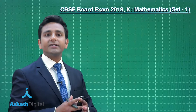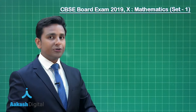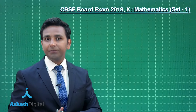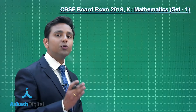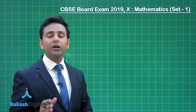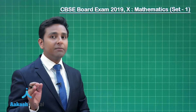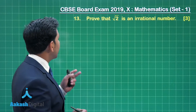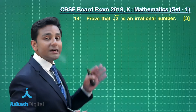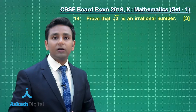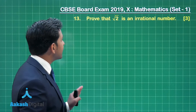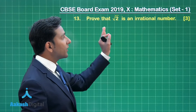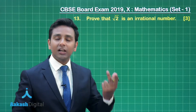Let us discuss the solution of Section C. Question numbers 13 to 22 carry 3 marks each. Now let us discuss question number 13. This question is from the chapter Real Numbers and the question says: prove that √2 is an irrational number.